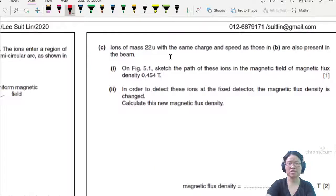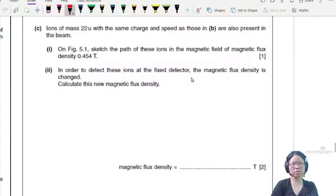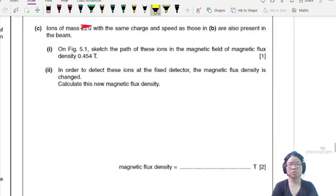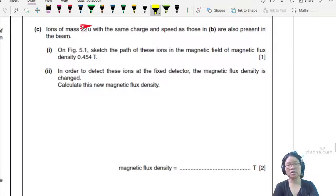Moving on. Ions of mass 22U with the same charge and speed as those in B are also present in the beam. So now this is heavier mass. Sketch the path of these ions in the magnetic field of magnetic flux density 0.545. So we have the same charge, same speed. The only difference here is now our mass is heavier. And part two: in order to detect this ion at the fixed detector, the magnetic flux density is changed. Calculate this new magnetic flux density. We do part one first.